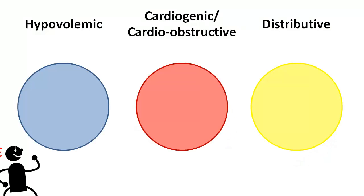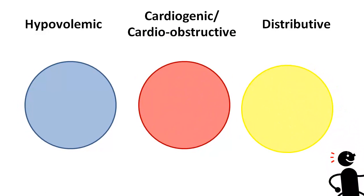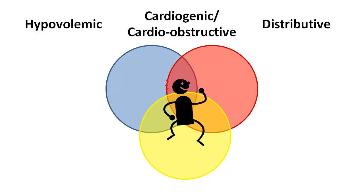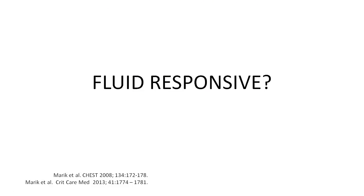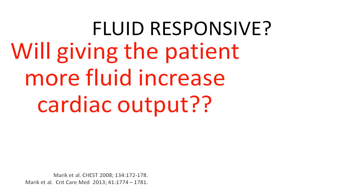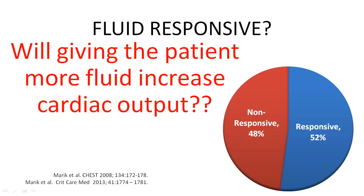Importantly, patients don't fall into one category or another exclusively, and patients can have multiple types of shock going on at the same time. When treating patients in a state of shock, the clinician is often forced to decide if the patient would be fluid responsive — meaning, will giving the patient more intravenous fluids increase cardiac output. About 50% of patients will and 50% will not be volume responsive.